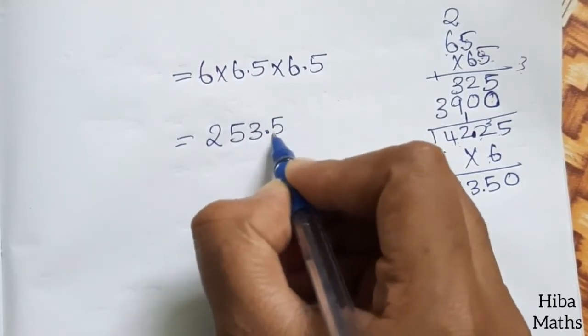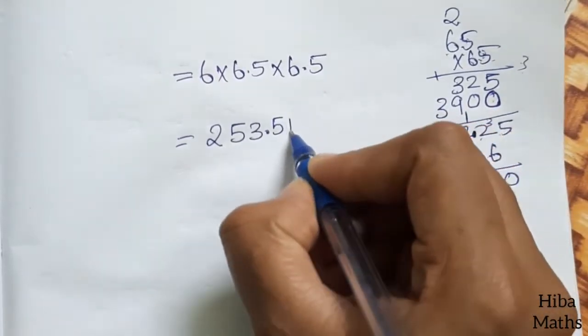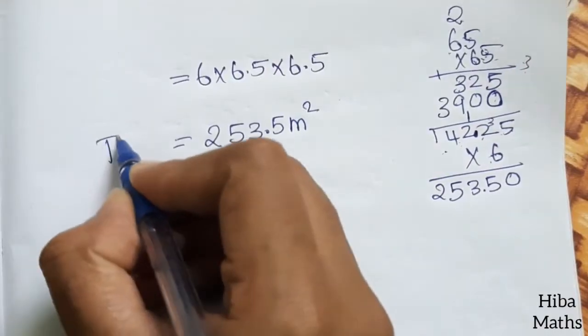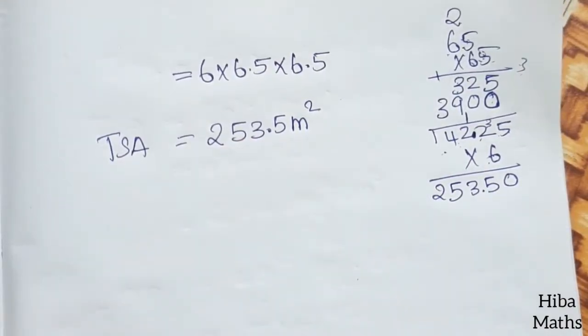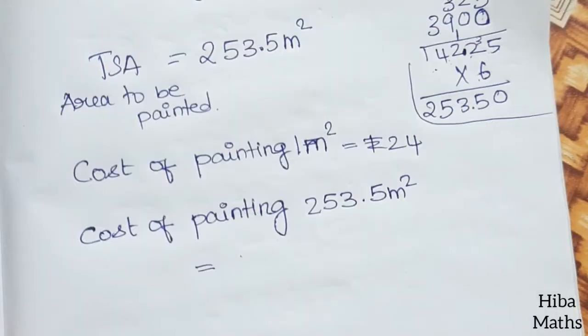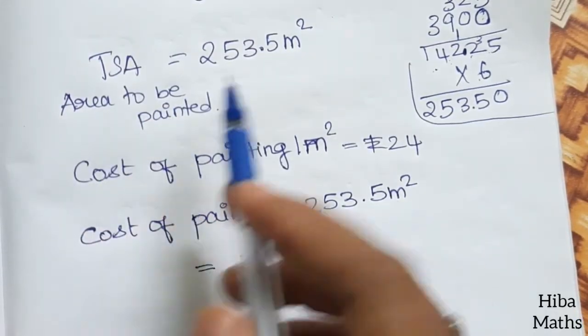TSA equals 253.5 square meters. Area to be painted is 253.5 square meters.